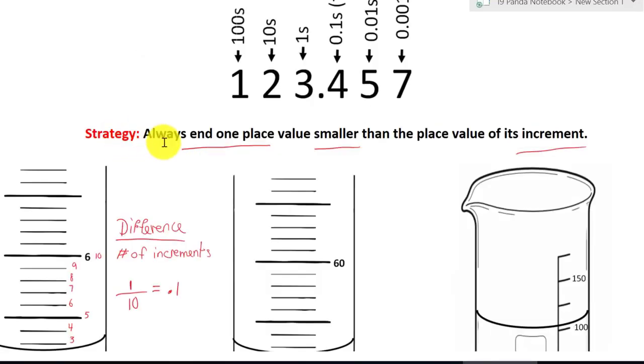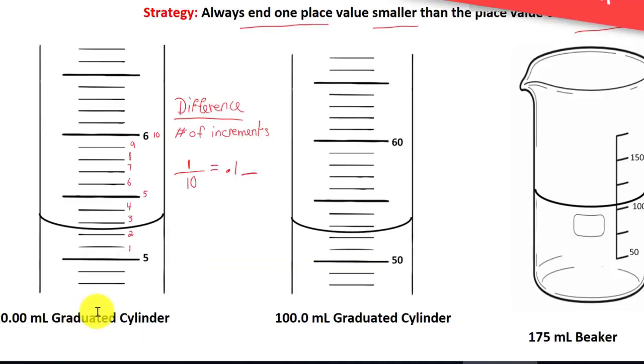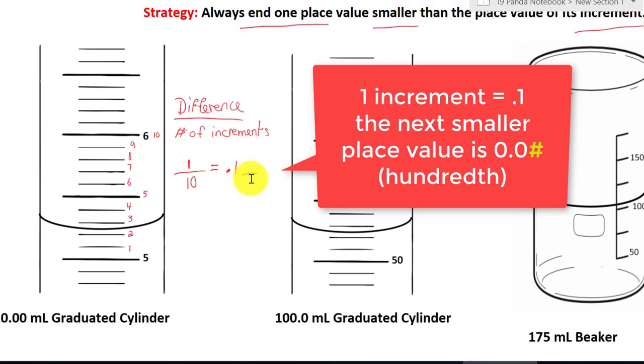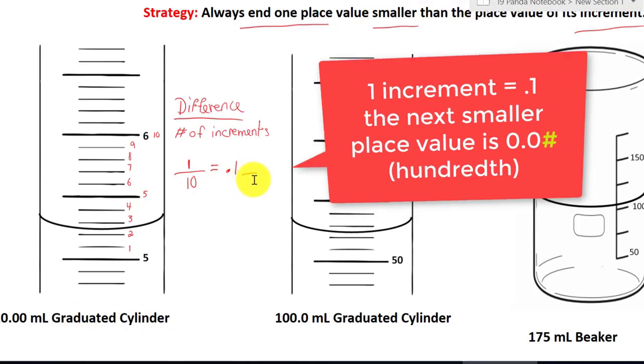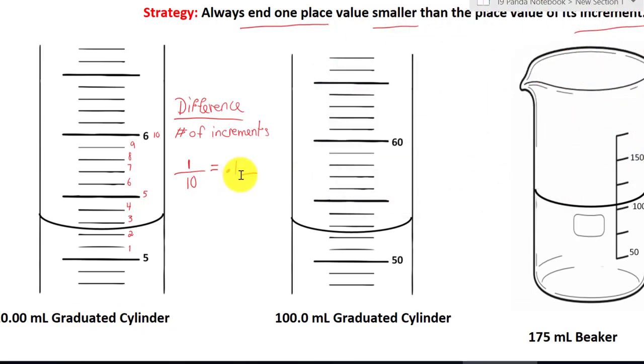Let's go back to the strategy. The strategy is always end one place value smaller than the place value of its increment. So now let's look up here. What is smaller than tenths? Hundredths. For this device, it will always end at the hundredths. There will always be two decimal places.